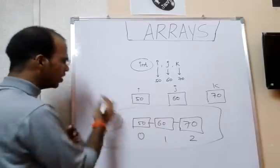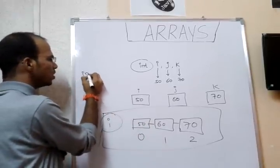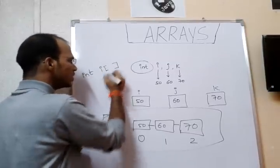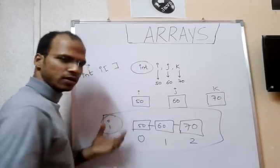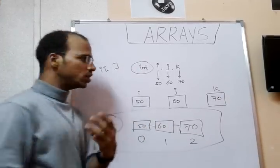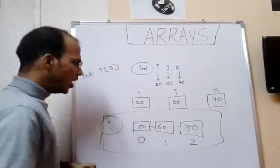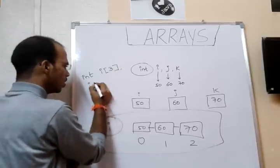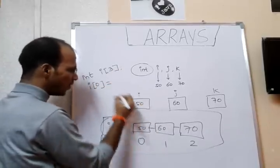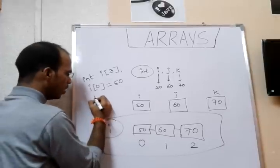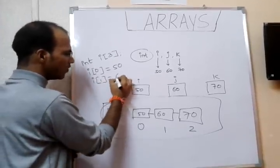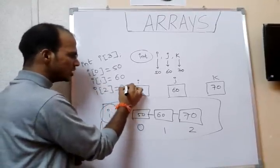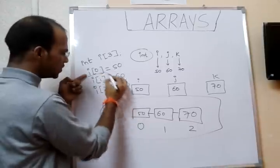When you collect all int elements, you get an array of int named 'i'. To create this array in C, you write the type, then the variable name, then the size in brackets — for example, 'int i[3]'. This defines the size of your array as 3. To store 50 at location 0, you write i[0] = 50; to store 60, i[1] = 60; and i[2] = 70.